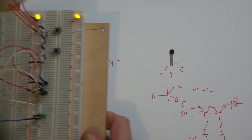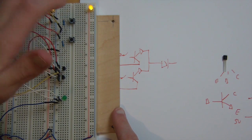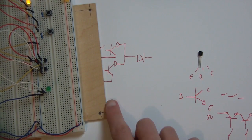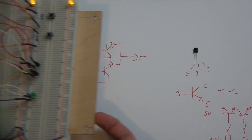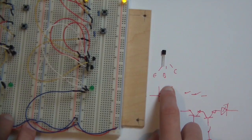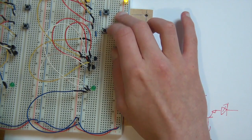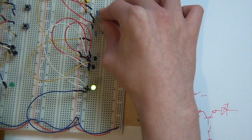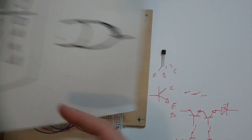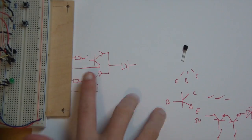This looks a lot more complicated but it's actually not. We're going from plus five volts to the switches — that's the red cables — and at the same time we're going from plus five volts to the collector of the transistor. Then we have cables going from the switches to the base of the transistor. If you press input B, then the output is true. If you press input A, then the output is true. If you press both inputs, the output is true. This is an OR gate — as soon as one input is true, the output is true.